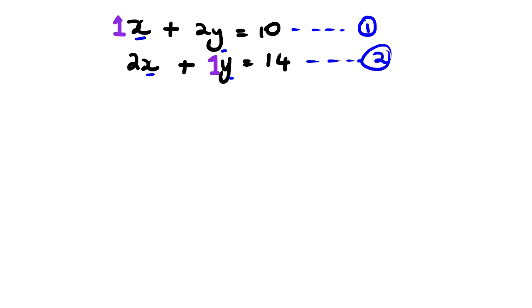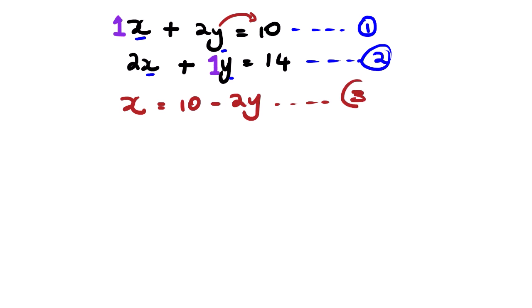Let me choose equation number one and make x the subject of the formula. So it will be x equals 10 minus 2y, and we label this as equation number three, since it is our new equation. From here we are going to substitute.